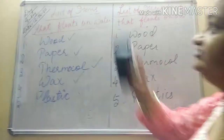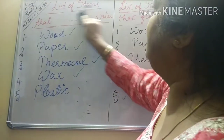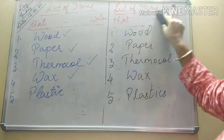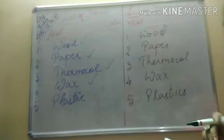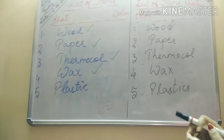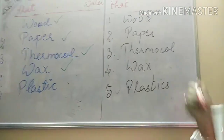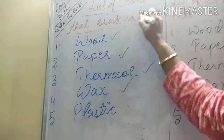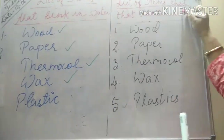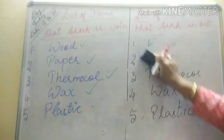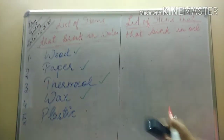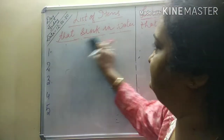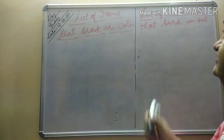Now let's move to the next part — things that sink in water and also sink in oil. If the things sink in water, they will definitely also sink in oil. Let me write down the list of items that sink in water and that sink in oil.